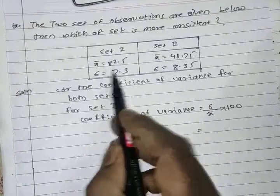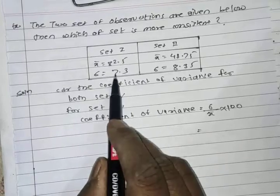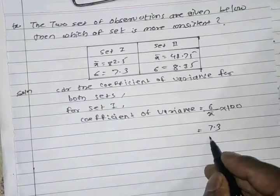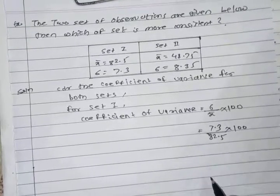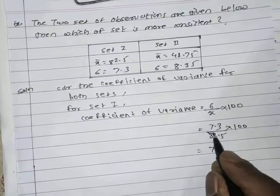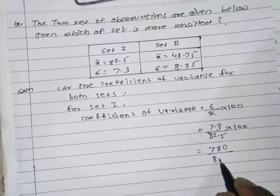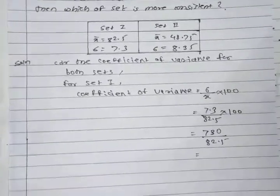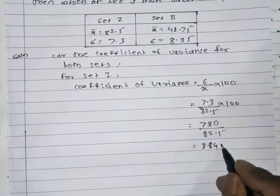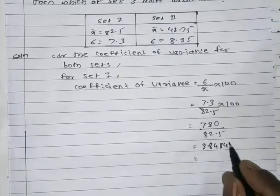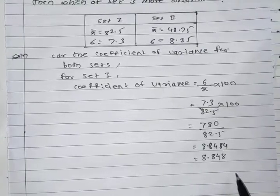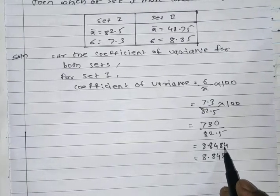For Set 1, sigma is 7.3 and x-bar (mean) is 82.5. So coefficient of variance equals 7.3 divided by 82.5, multiplied by 100, which gives 730 divided by 82.5. The value is approximately 8.848.